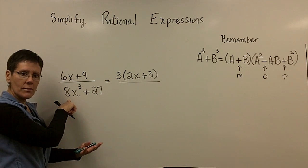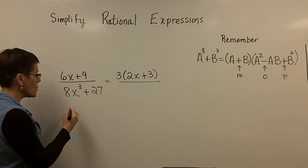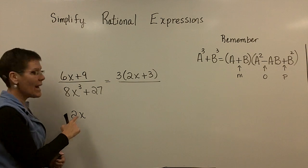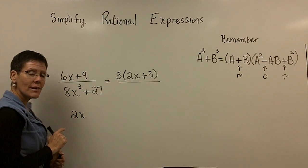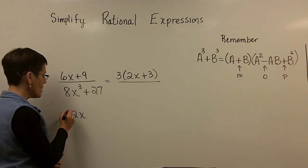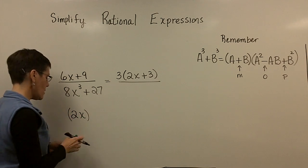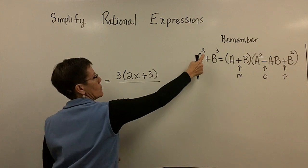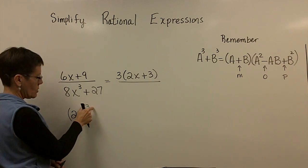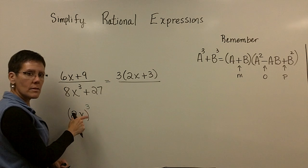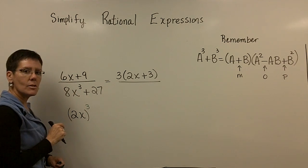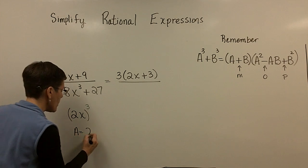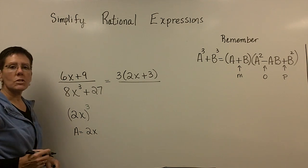I'm asking you for what number times itself three times gives you 8. And 2 is that number. Two times itself three times gives you 8. And then, you know, what letter times itself three times gives you x to the third? And that letter is x. So the factor 2x, if you cubed it, this a value, if you cubed 2x, 2x times 2x times 2x is 8x cubed. So my a value that I'm going to put into this problem everywhere is going to be the expression 2x.